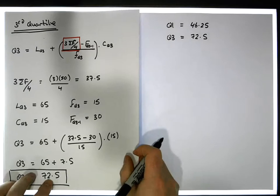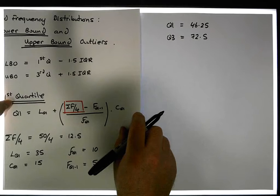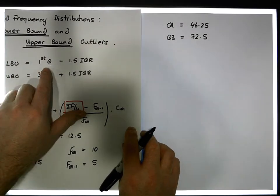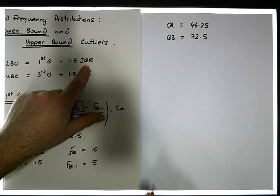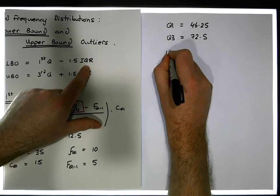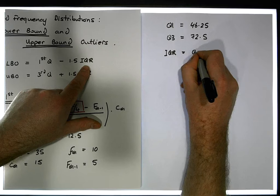So now if we go back to our formula that we were given at the start, which said that the lower bounds are at the first quartile minus 1.5 times the interquartile range. So the interquartile range, the IQR, is the difference between Q3 and Q1, so it's Q3 minus Q1.